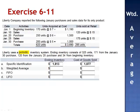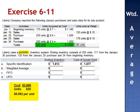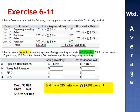Part B assumes that we're using the periodic weighted average system. When using a periodic method, we still calculate cost per unit. Total cost divided by total units is $3,690 divided by 620 units, for an average cost of $5.952 per unit. To calculate the value of ending inventory, we multiply the number of units in inventory, 325, by the average cost per unit, $5.952. The value of ending inventory is $1,934.